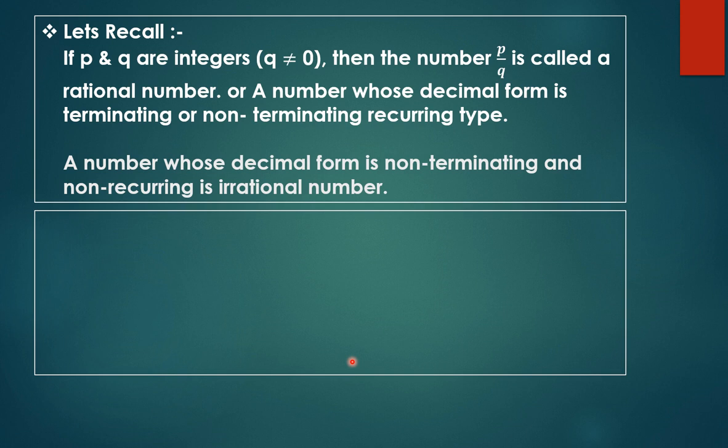We learned about rational numbers and irrational numbers. A rational number is one where p and q are integers and q is not equal to zero, then the number p upon q is called a rational number. In other words, a number whose decimal form is terminating or non-terminating recurring type is called a rational number.